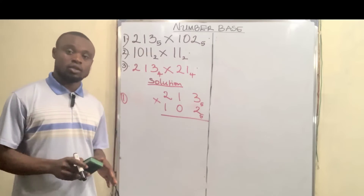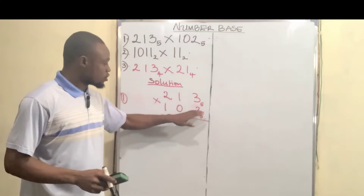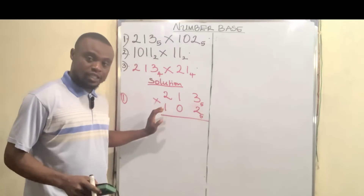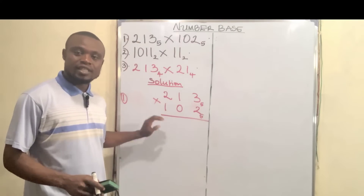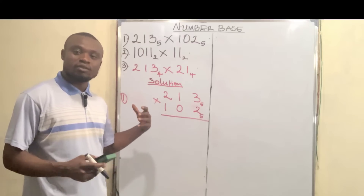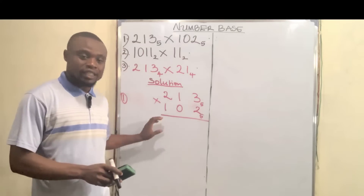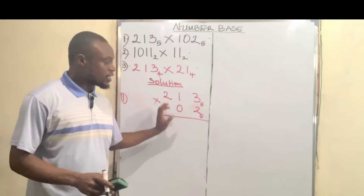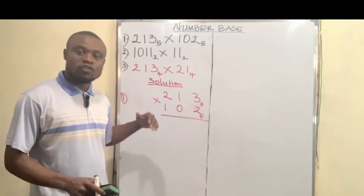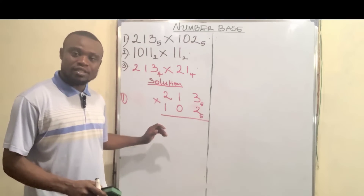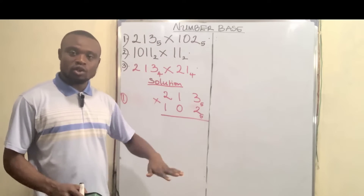Since this particular question is in base 5, the numbers we get from multiplying two numbers must also be in base 5. So if we get a number that is above that particular base, that means we reduce it — we divide it by the base and write the remainder.